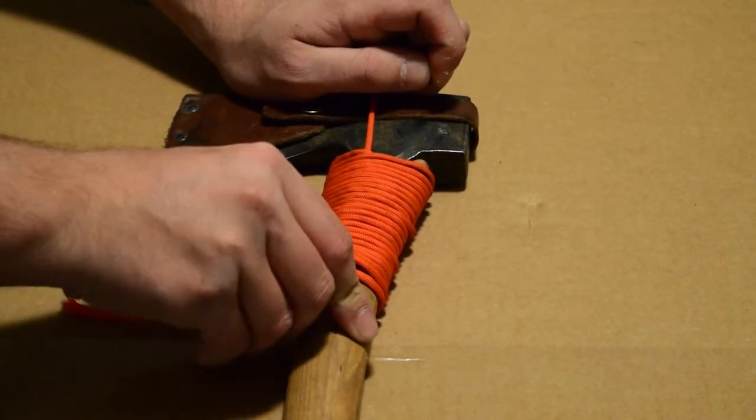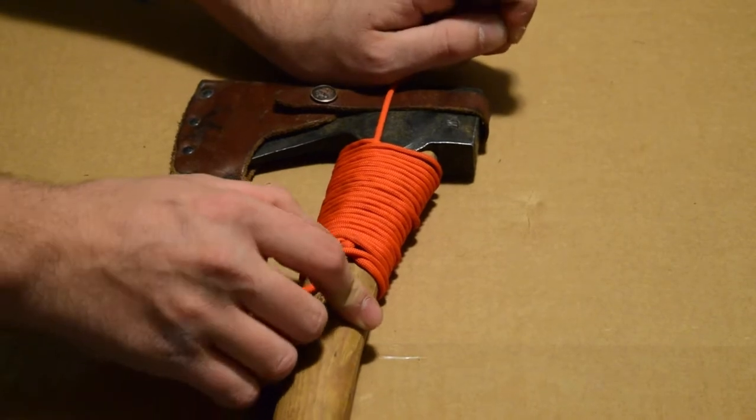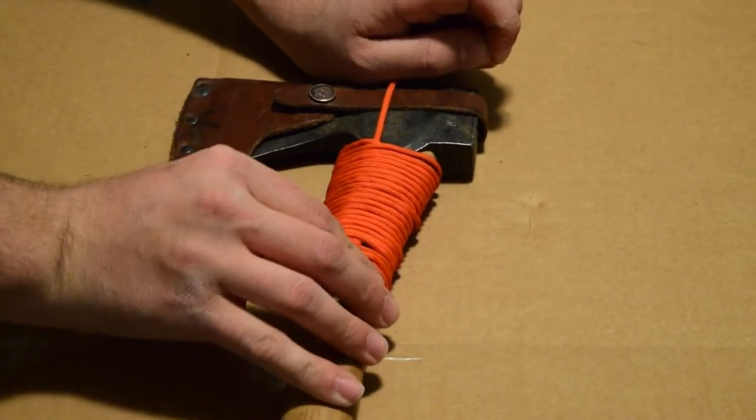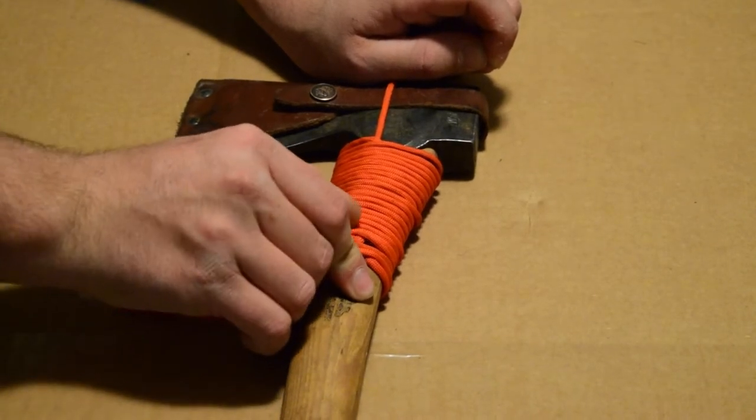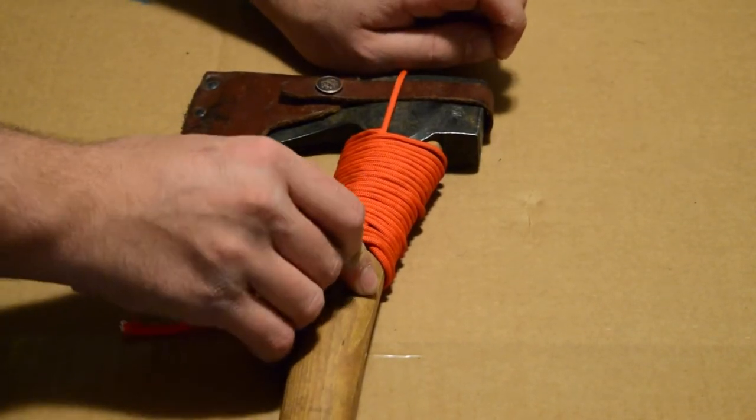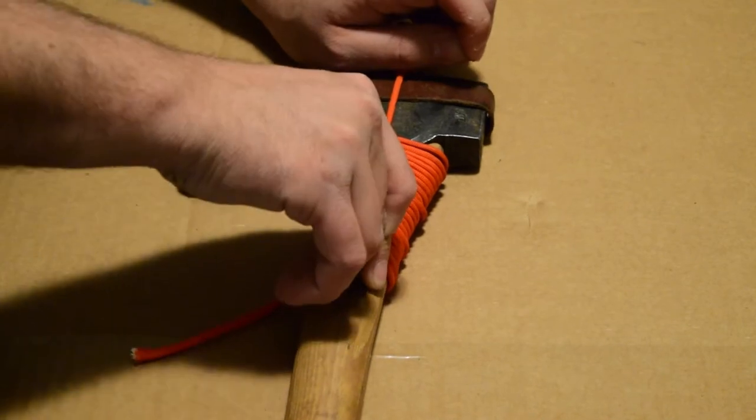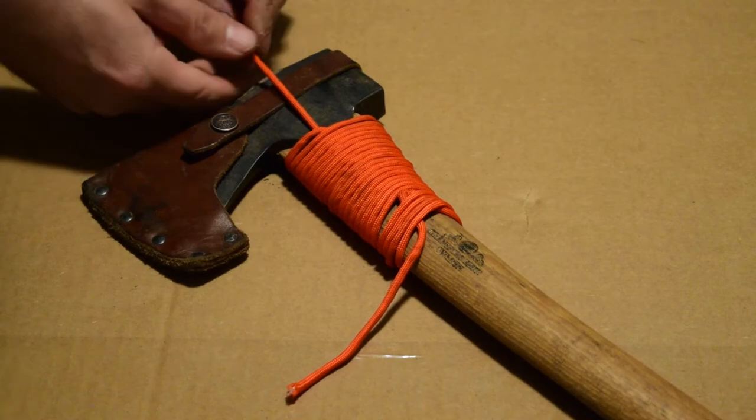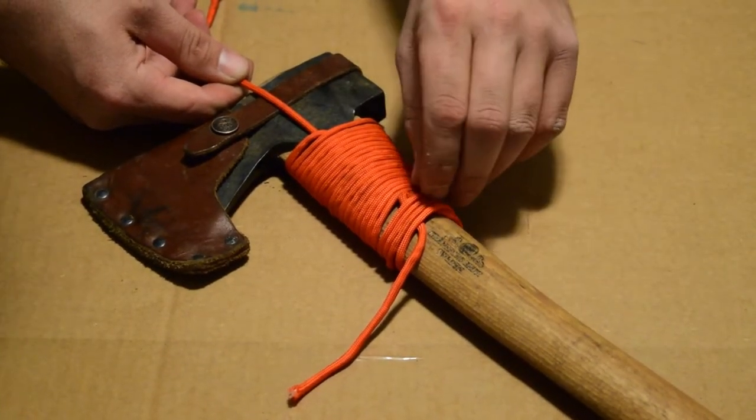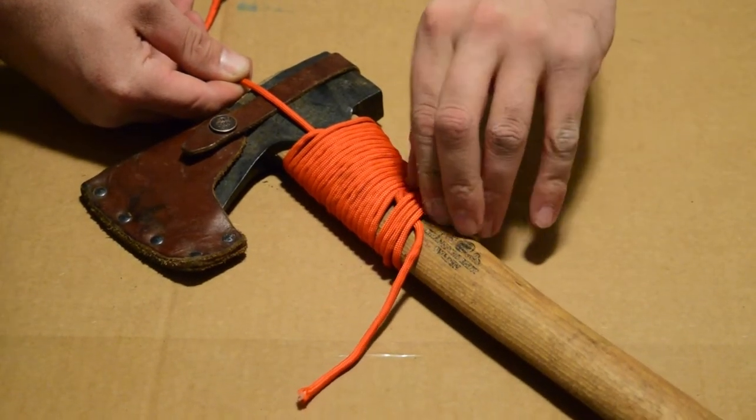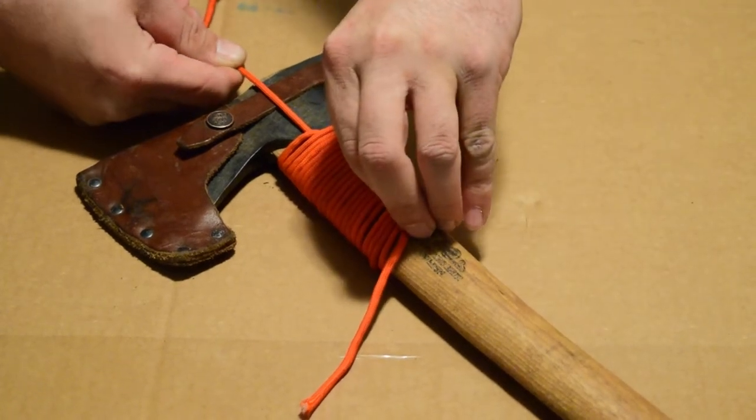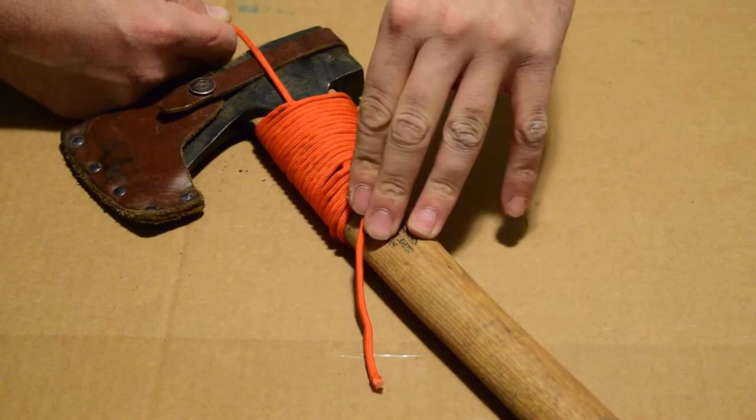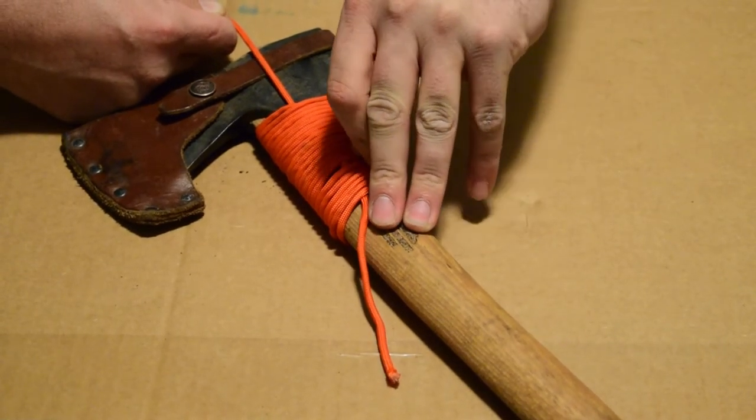And all you want to do is kind of use like your fingernail or your finger, kind of help push that knot that it made over the strands of paracord. So each time you tug on it, just kind of help guide that underneath.